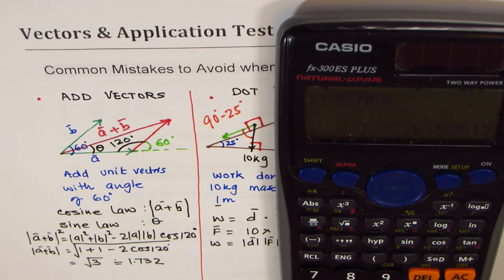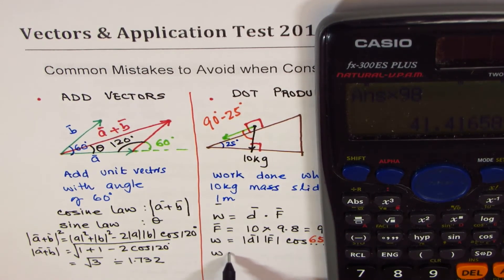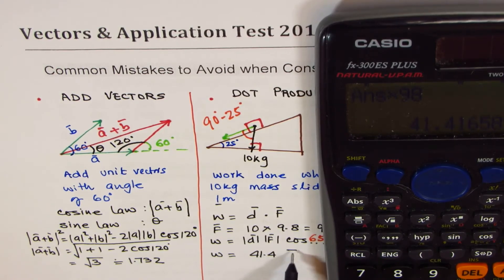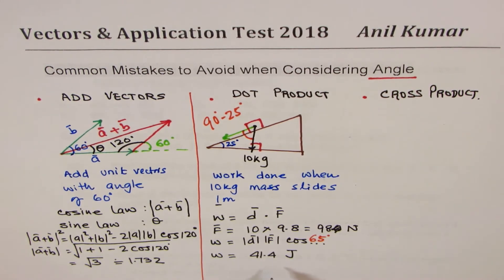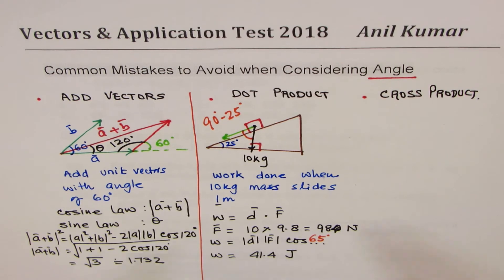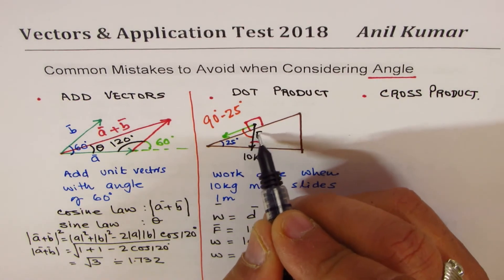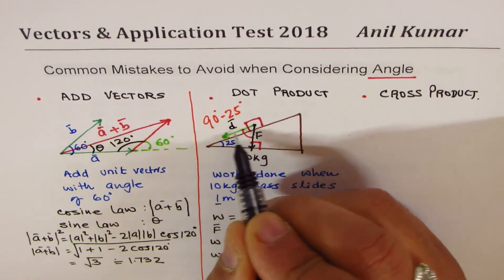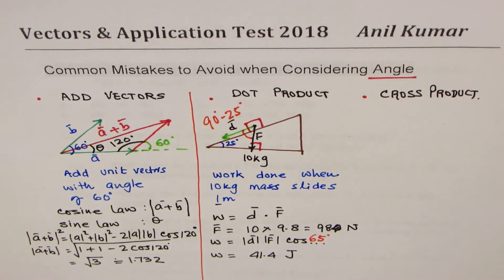So we get the work done as 41.4 joules, newton meter also. Do you understand this part? So very important to understand. The angle is not 25 degrees. It is 90 minus 25, since that is the angle between the force, which is acting downwards, and the displacement, which is acting in this. So you have to place them tail to tail to find this particular answer. Is that clear to you? So I hope that is very useful to understand.